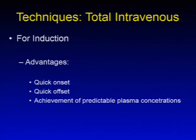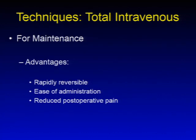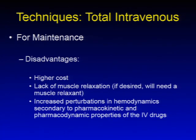For TIVA induction, advantages include quick onset, quick offset, and achievement of predictable plasma concentrations. Disadvantages include causing apnea, hypotension, pain on injection, or reflex tachycardia. For maintenance, advantages include being rapidly reversible, easy to administer, and associated with reduced postoperative pain. Disadvantages are higher cost, lack of muscle relaxation — requiring a muscle relaxant if desired — and increased perturbations in hemodynamics secondary to pharmacokinetic and pharmacodynamic properties of the IV drugs.